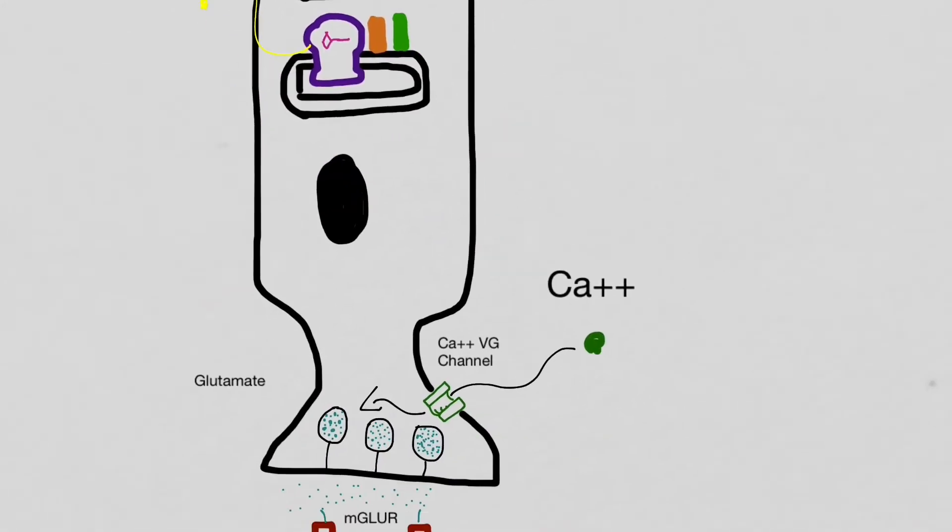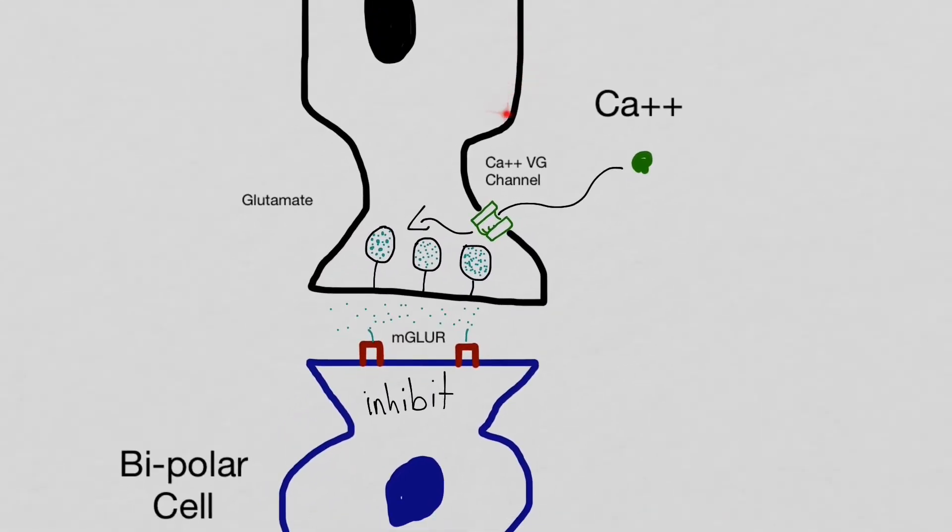The negative 70 membrane potential will also cause the calcium voltage-gated channels to close. With the decrease of calcium diffusing into the cell, the glutamate is not released. With no glutamate activating the metabolic glutamate receptors, the bipolar cell is not inhibited.